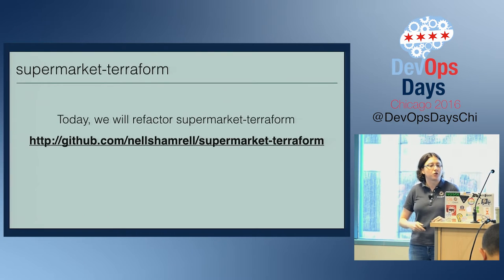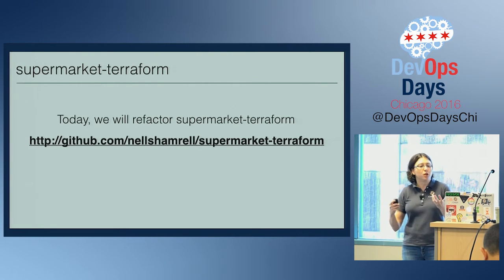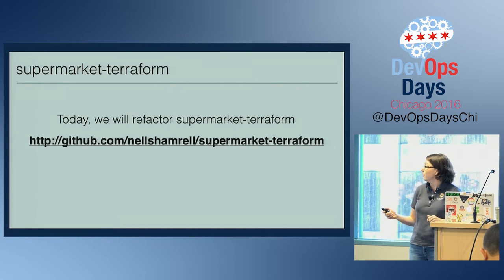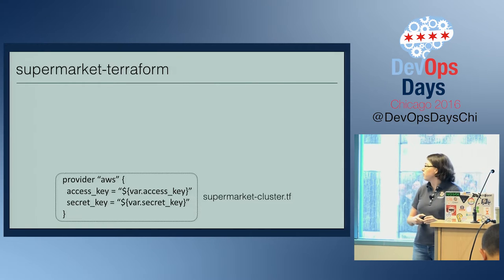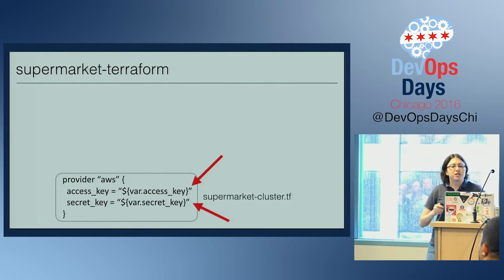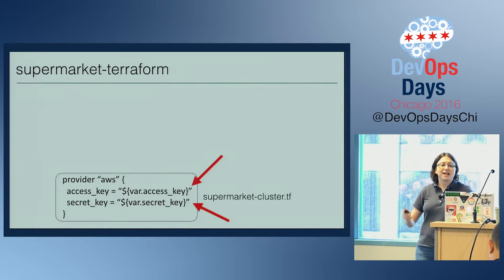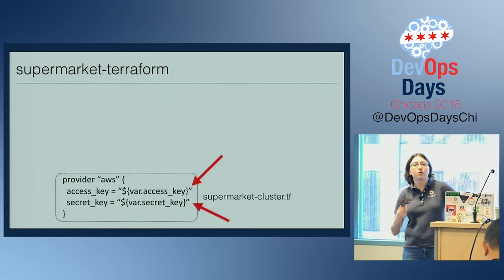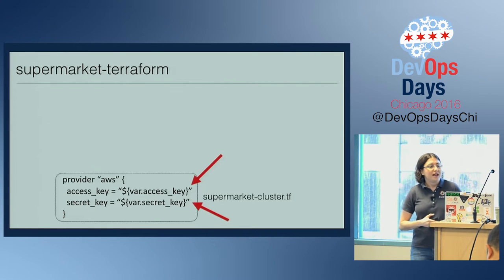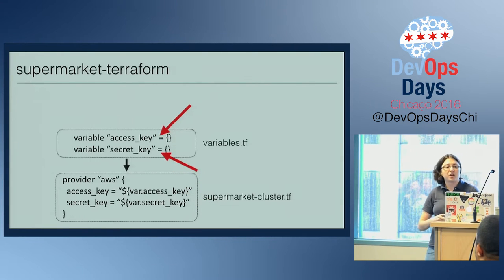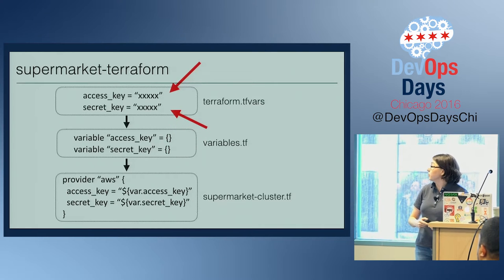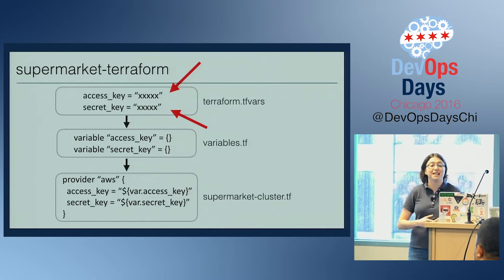When I refactor code — whether application code or infrastructure code — I like to start out by mapping the major components. I'm a visual learner, so I prefer doing this visually. The first file is called supermarketcluster.tf. I define variables in variables.tf, and I provide the values in a config file called terraform.tfvars. These three files are the core files within this Terraform config.